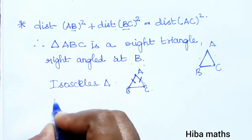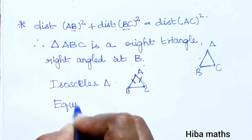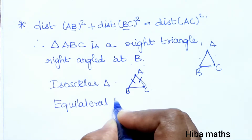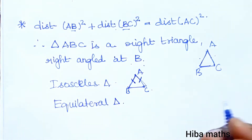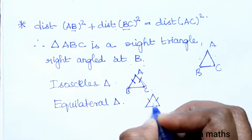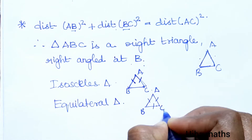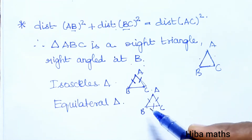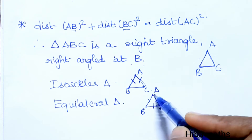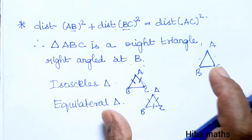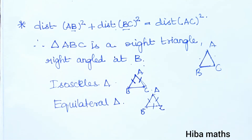The next topic is the equilateral triangle. For an equilateral triangle, all sides are equal. So we calculate AB, BC, and AC — if all three are equal, it is an equilateral triangle.